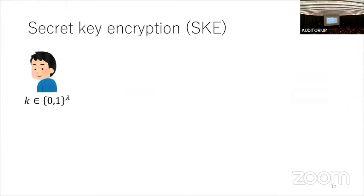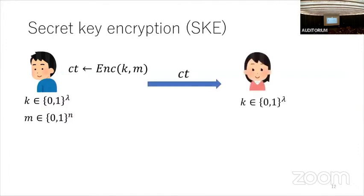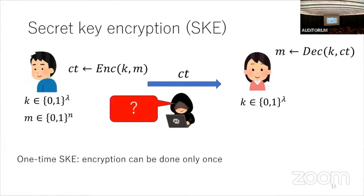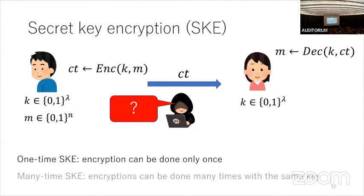Secret key encryption: the sender has a secret key K and message M, applies an encryption algorithm to generate a ciphertext, and sends it to the receiver. The receiver uses key K to decrypt. An adversary with access to the ciphertext cannot learn the message. One-time SKE means encryption can be done only once with a single key; many-time SKE means you can encrypt many messages using one single secret key.